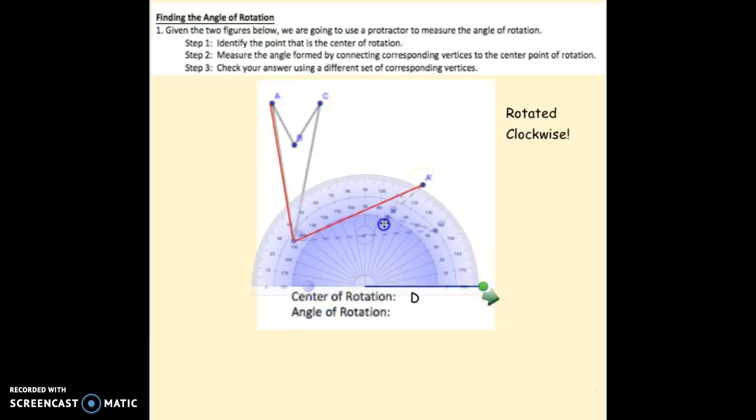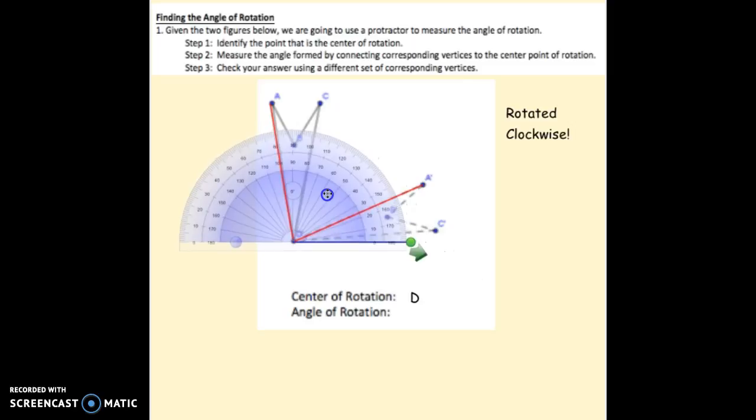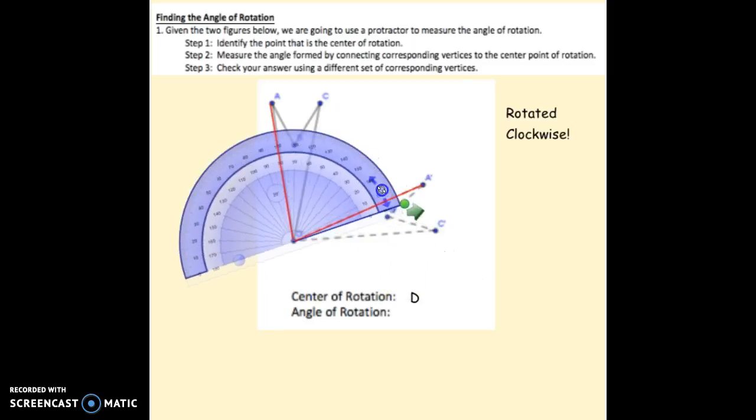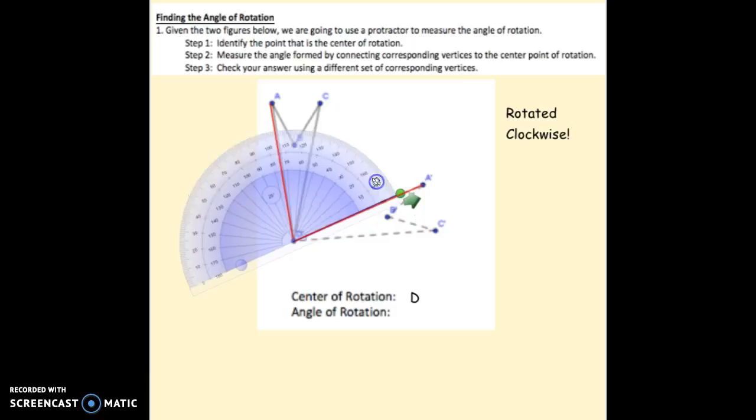Now I'm going to take my protractor. I'm going to put the vertex right on the center there and rotate this around so my bottom line lines up with zero. Take a second and see what reading you get there.